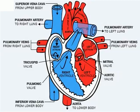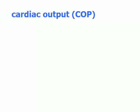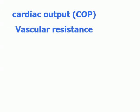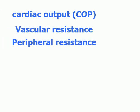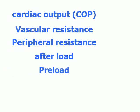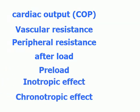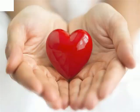Let us start with some important expressions like cardiac output, vascular resistance, peripheral resistance, afterload, preload, and inotropic and chronotropic effects. What is the meaning of each one?